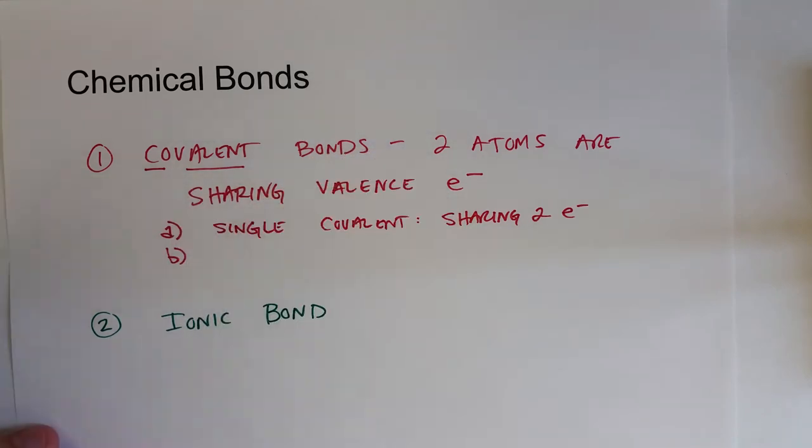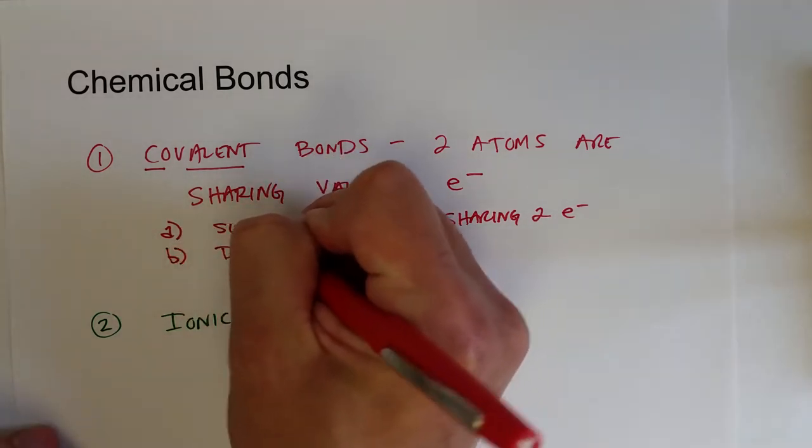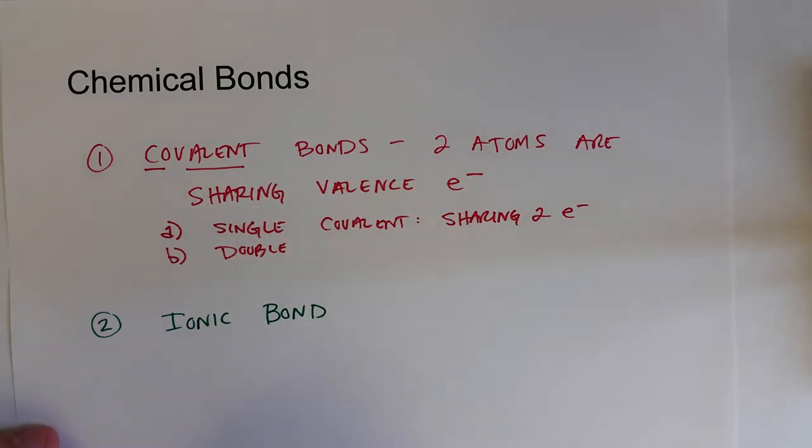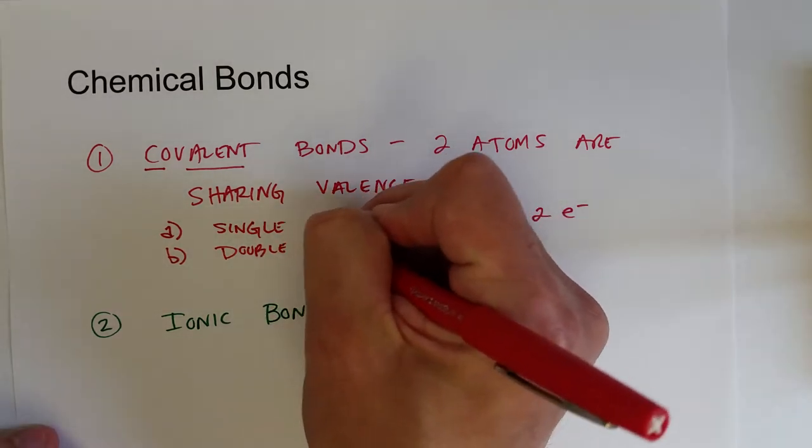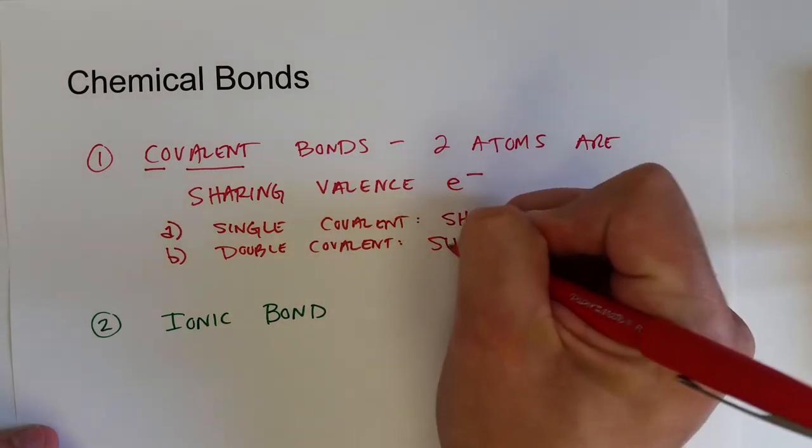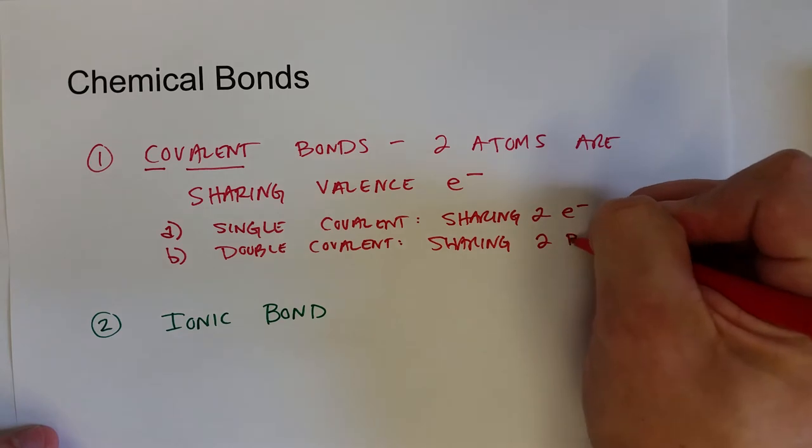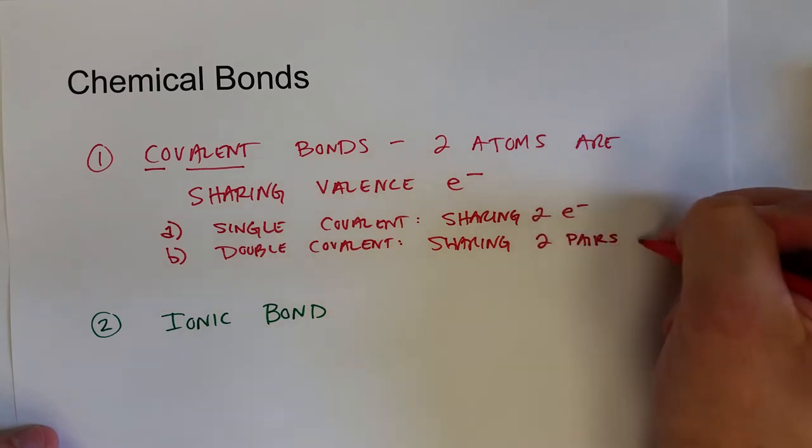A double bond is, you can think of it as two single bonds, where they are sharing two pairs of electrons for a total of four. Two pairs of electrons, so four total.